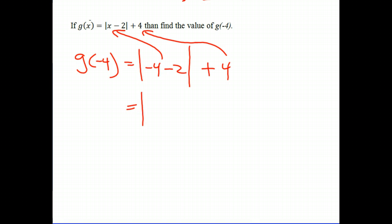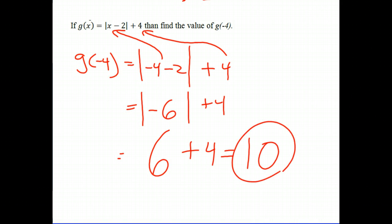Negative 4 and negative 2 is negative 6. That's still an absolute value sign, plus 4. We should know the absolute value of negative 6 is simply 6. According to the rule, we're going to add 4, so we get an answer of 10, and 10 is the value of our function, g of negative 4, which is also the same as saying it's our value of our y.